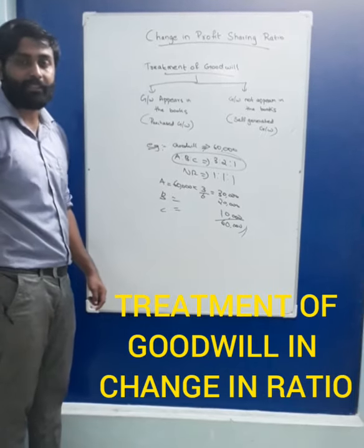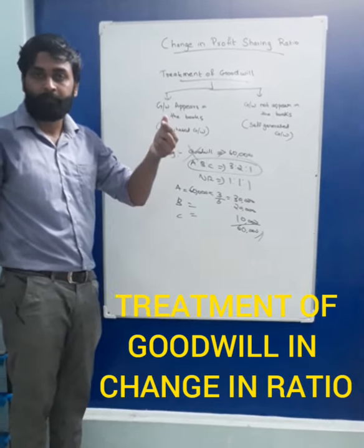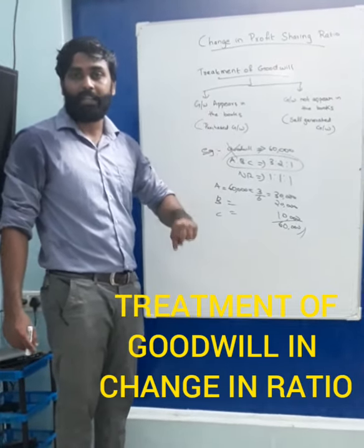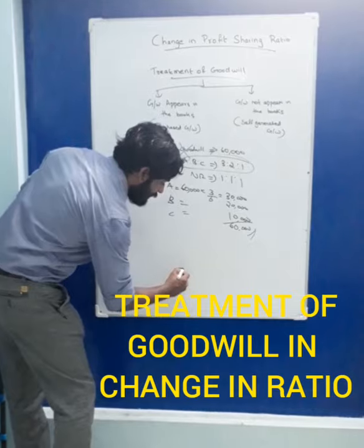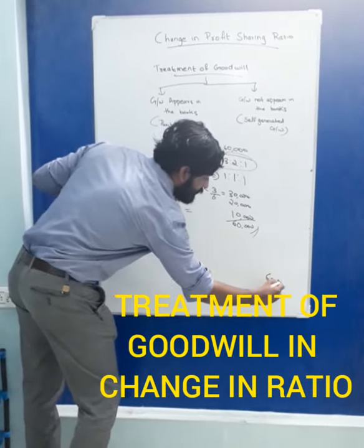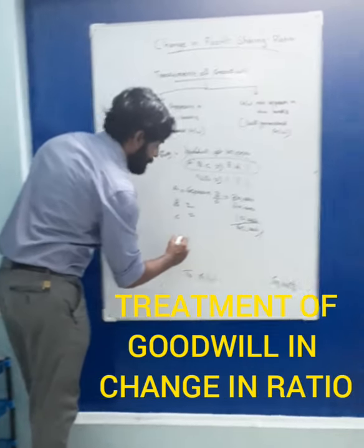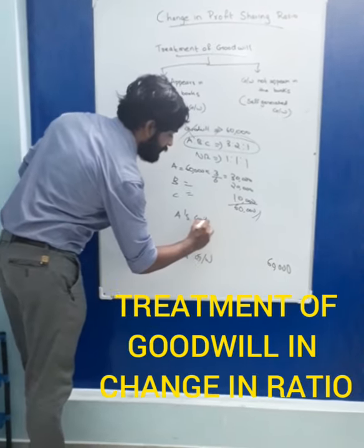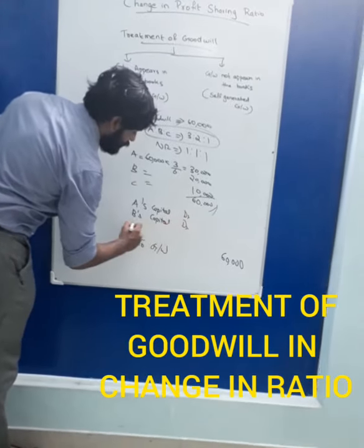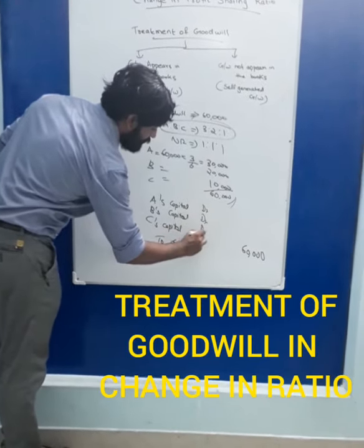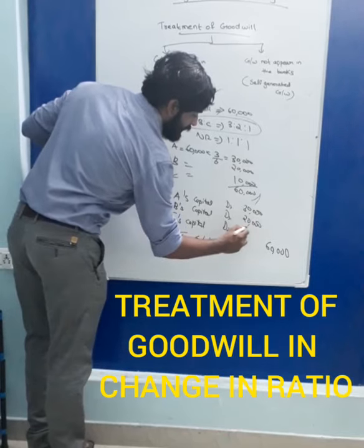The journal entry for this transaction: since there is no need to show goodwill anymore, and goodwill has a debit balance, to make it zero we have to credit it. So Goodwill account is credited 60,000. The partners are taking away that goodwill, so the partners' capital accounts are debited — A's capital debit 30,000, B's capital debit 20,000, C's capital debit 10,000 — to Goodwill.